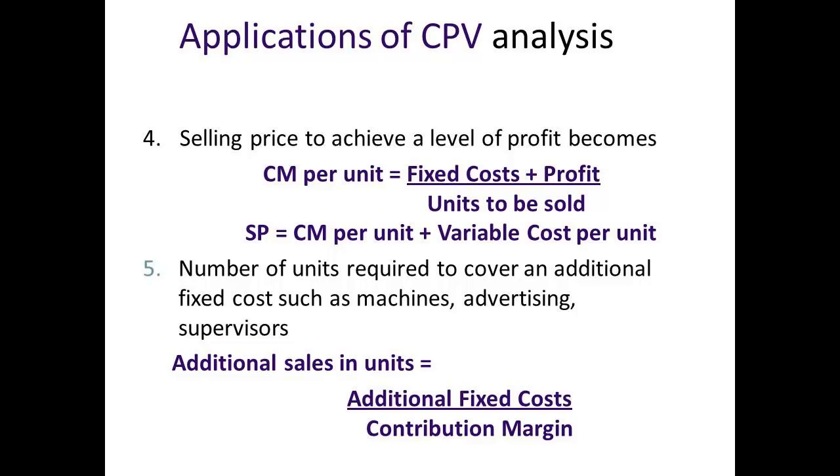The contribution margin per unit equals the fixed costs plus profit divided by the number of units to be sold, where the selling price is the contribution margin per unit plus the variable cost per unit.